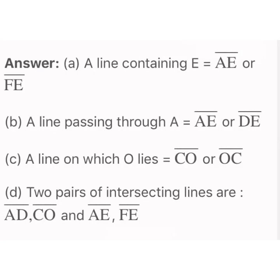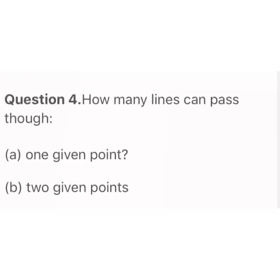Let's revise the answers. A line containing point E is line AE or line FE. A line passing through A is line AE or line DE. The line on which point O lies is line CO or line OC. The 2 pairs of intersecting lines are line AD and line CO, and line AE and line FE.